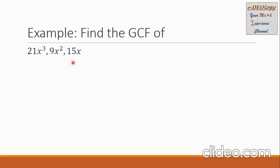Let's have an example. Find the GCF, or greatest common factor, of the three terms: 21x cubed, 9x squared, and 15x.